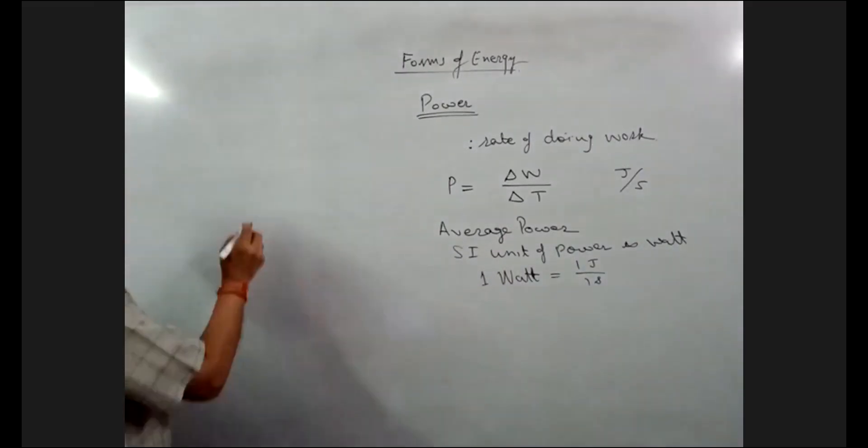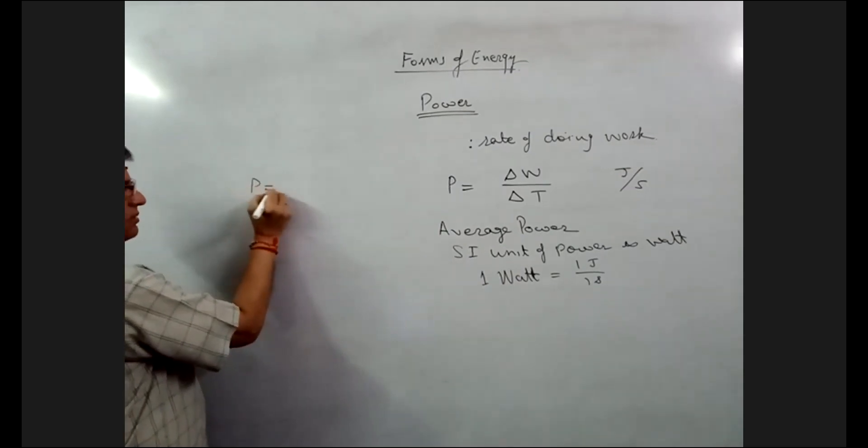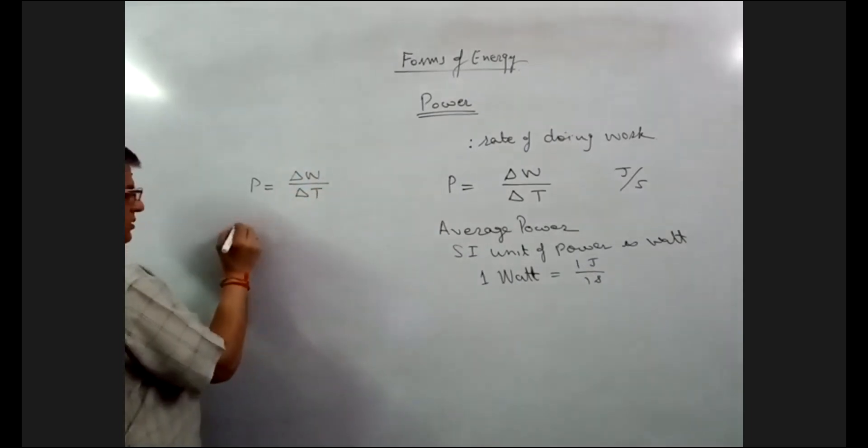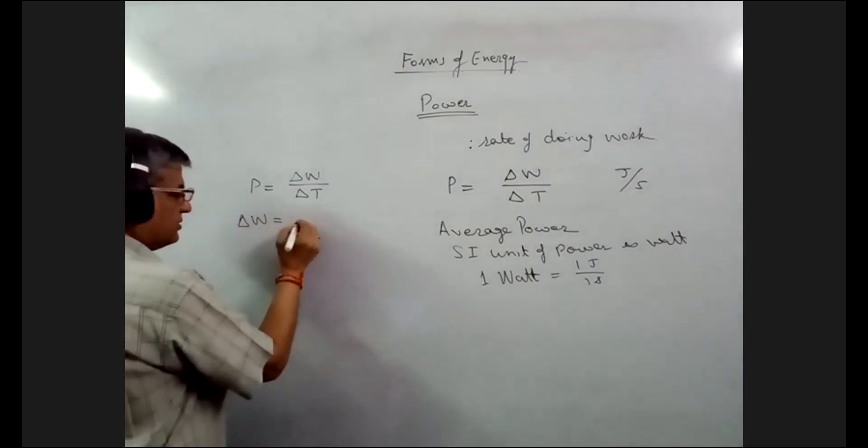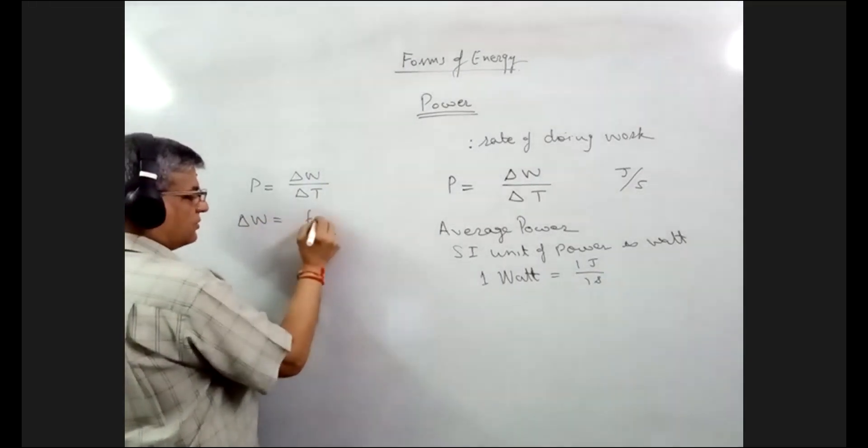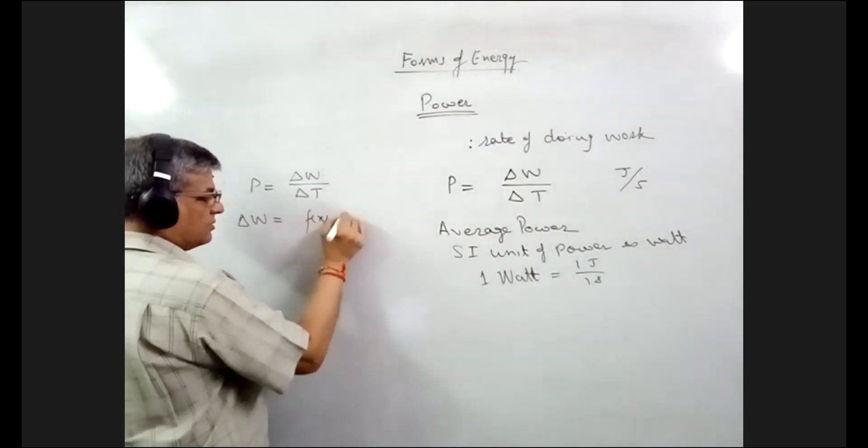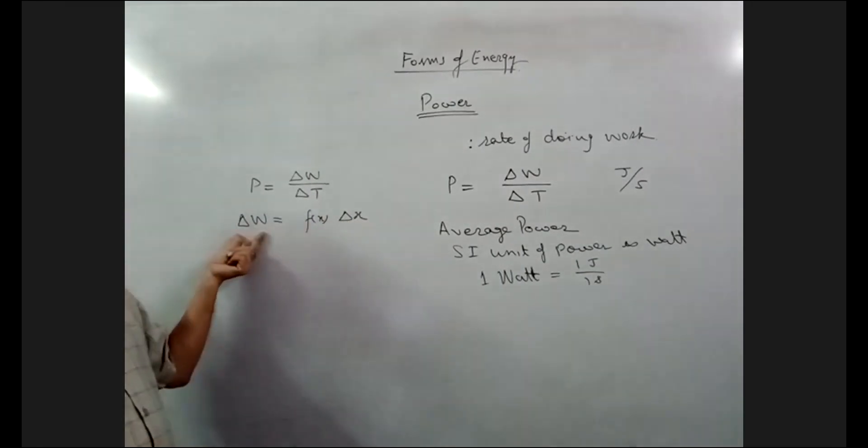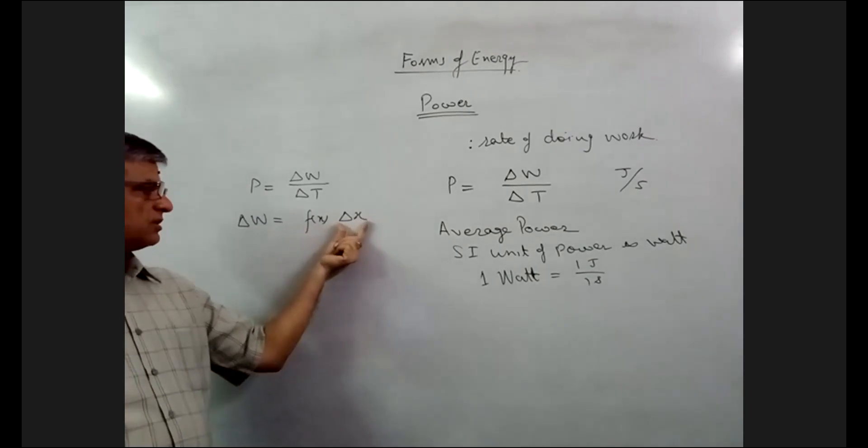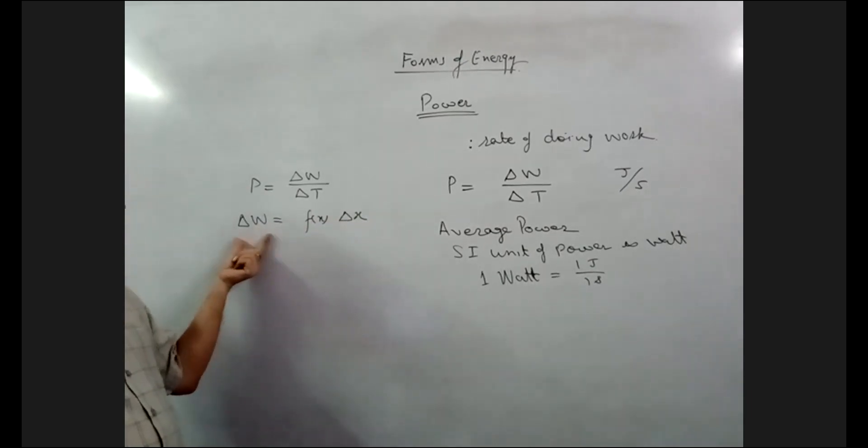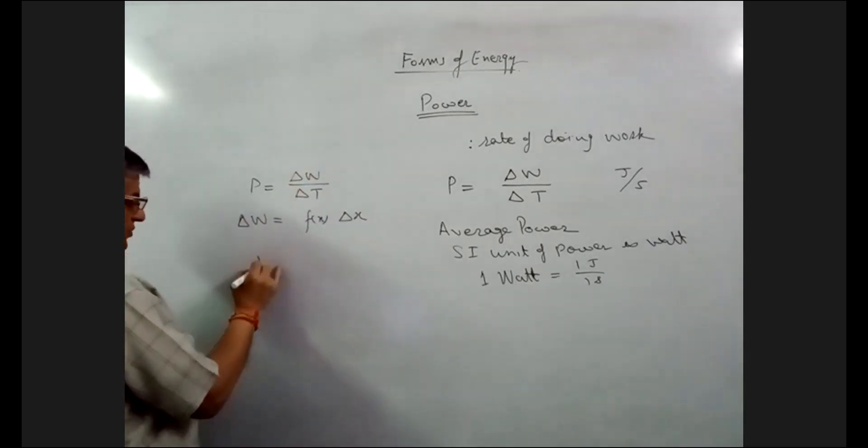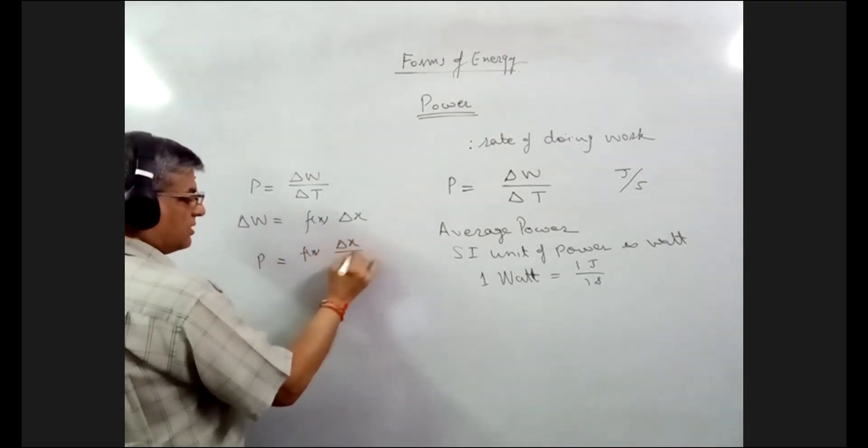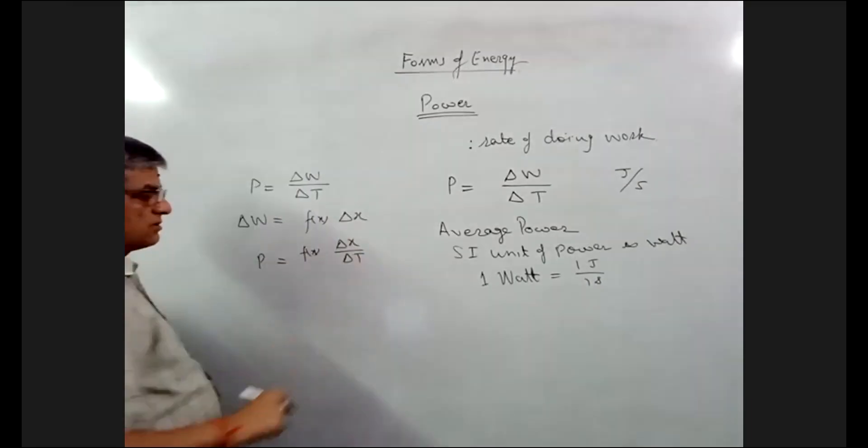Now, power is delta W upon delta T. And also delta W amount of work done is equal to force into displacement. Force into displacement is work. If a force created a small displacement, then small amount of work delta W is done. If I replace this delta W by this, then power becomes F into delta x upon delta T.